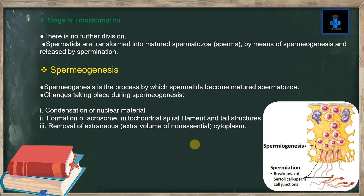The fourth stage is the stage of transformation. There is no further division. Spermatids are transformed into matured spermatozoa or sperms by means of spermiogenesis and released by spermiation. Spermiogenesis is the process by which spermatids become matured spermatozoa or sperms.